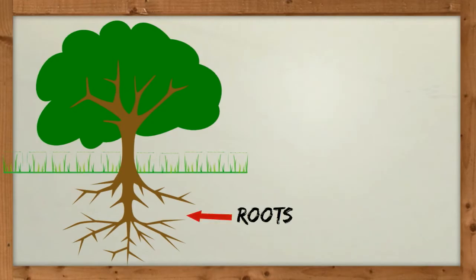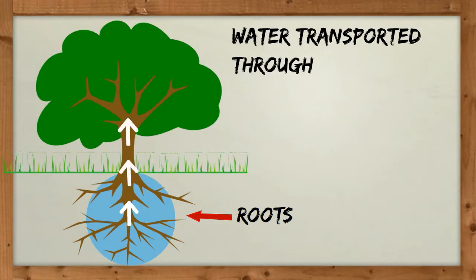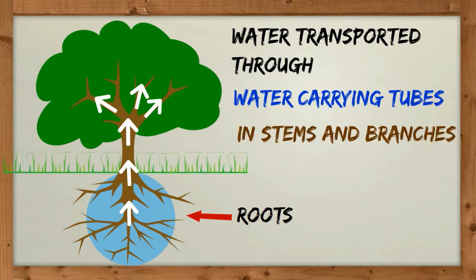The roots of a plant take in water from the soil. Water is then transported to the leaves through water-carrying tubes in its stems and branches.